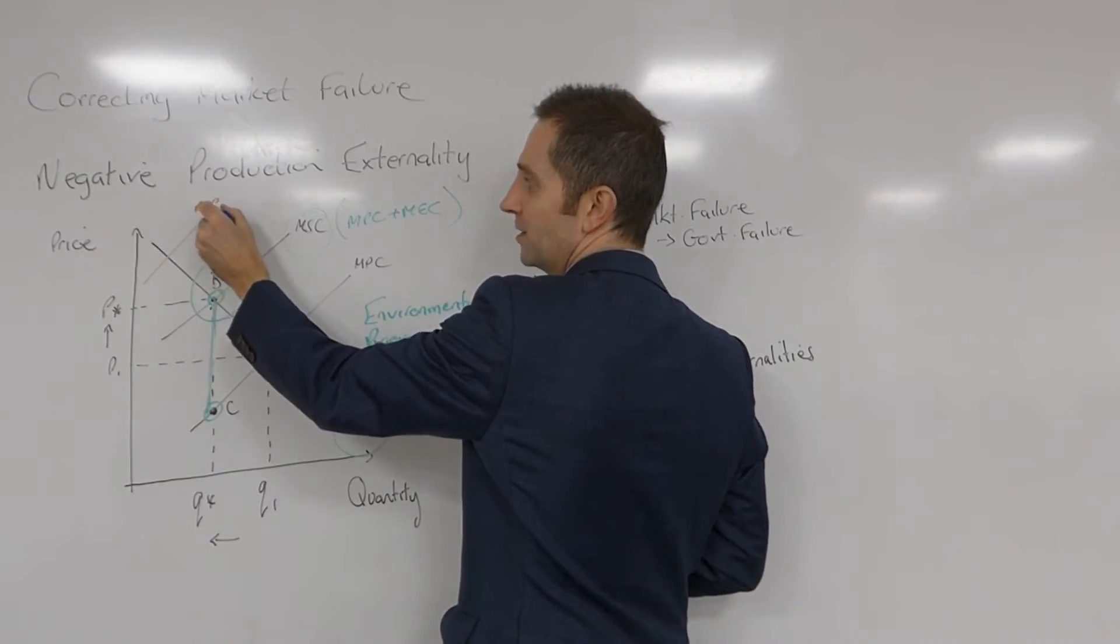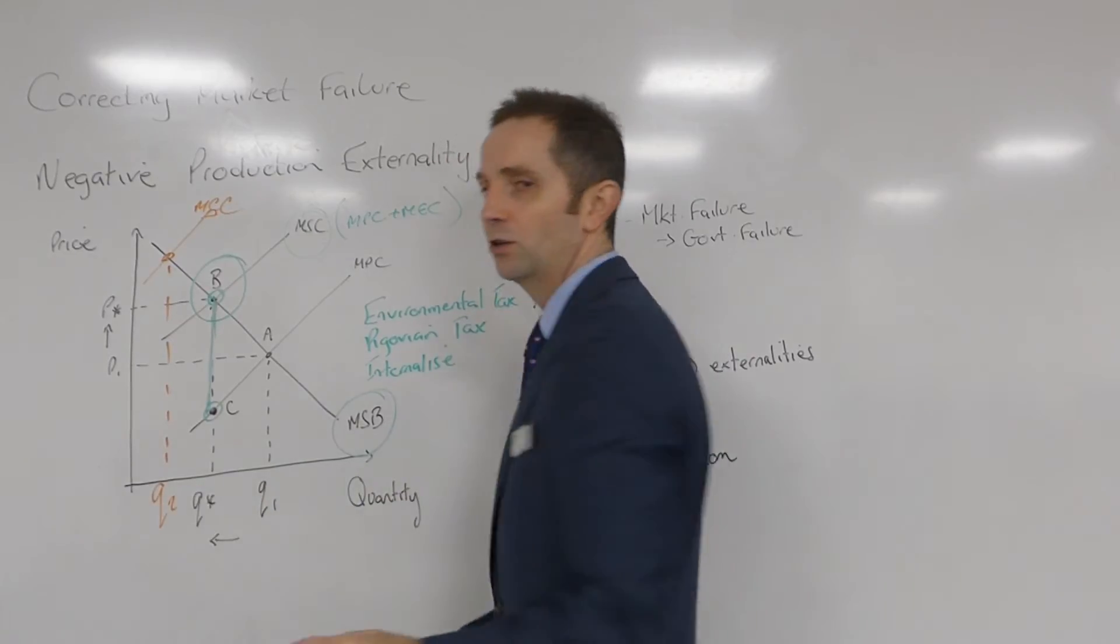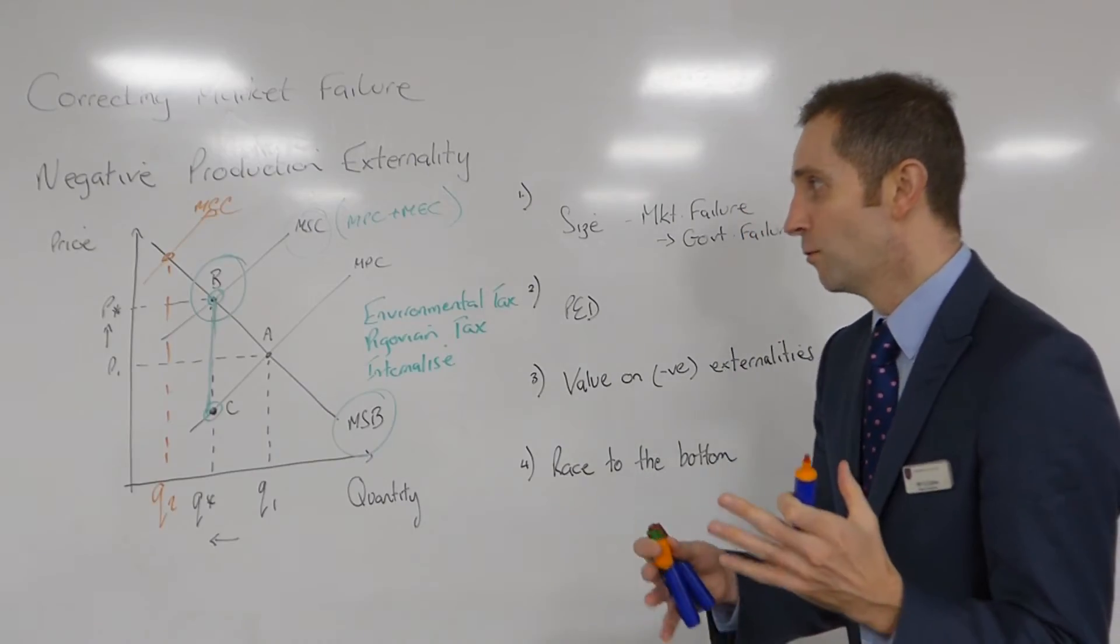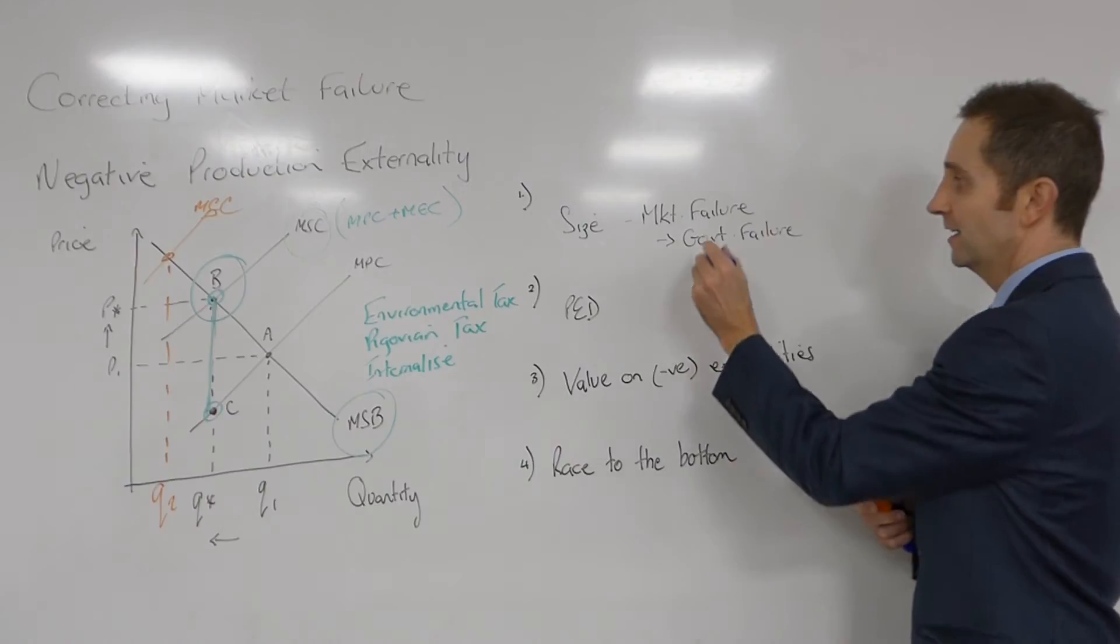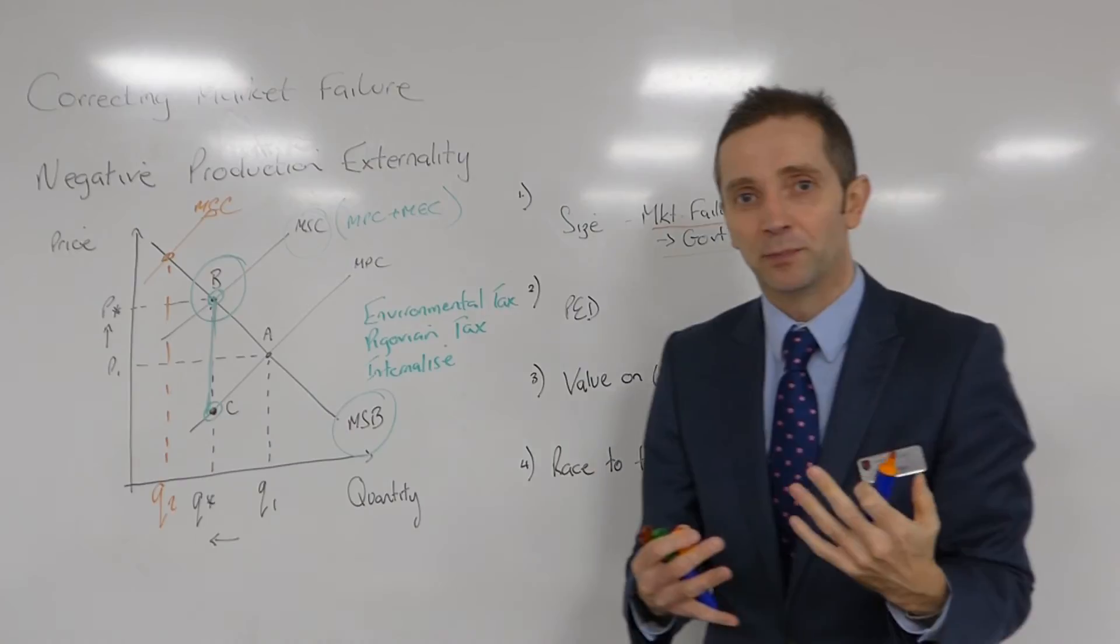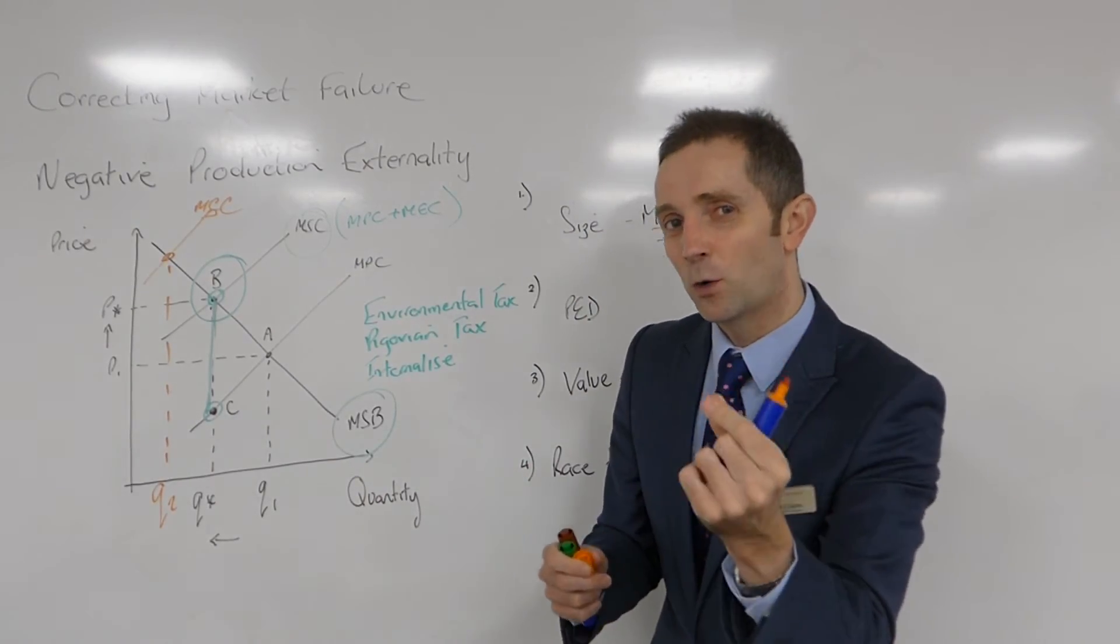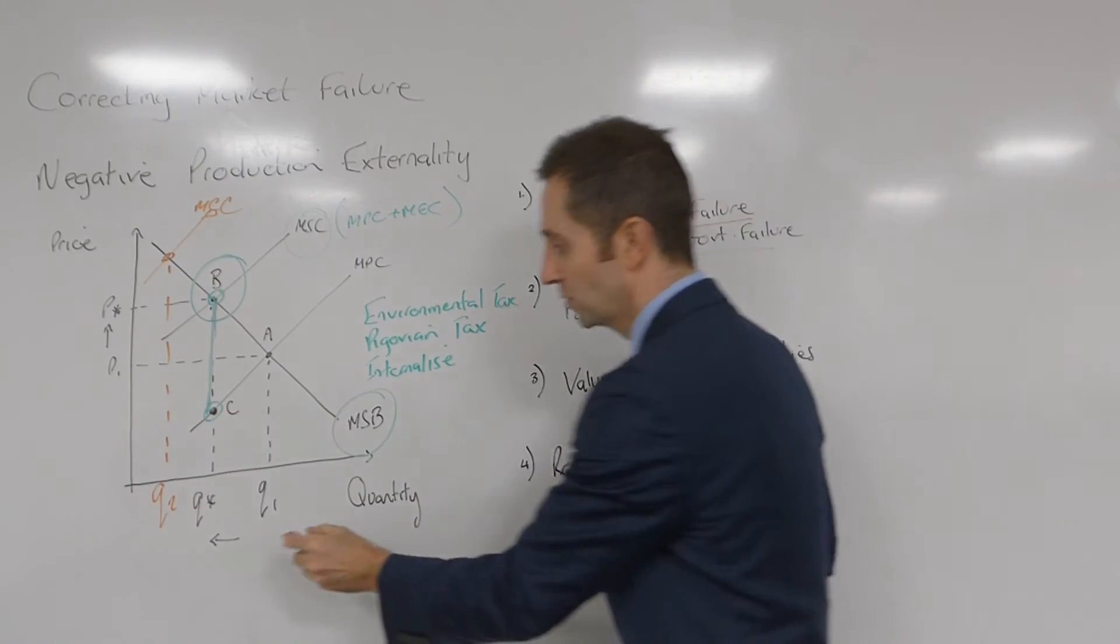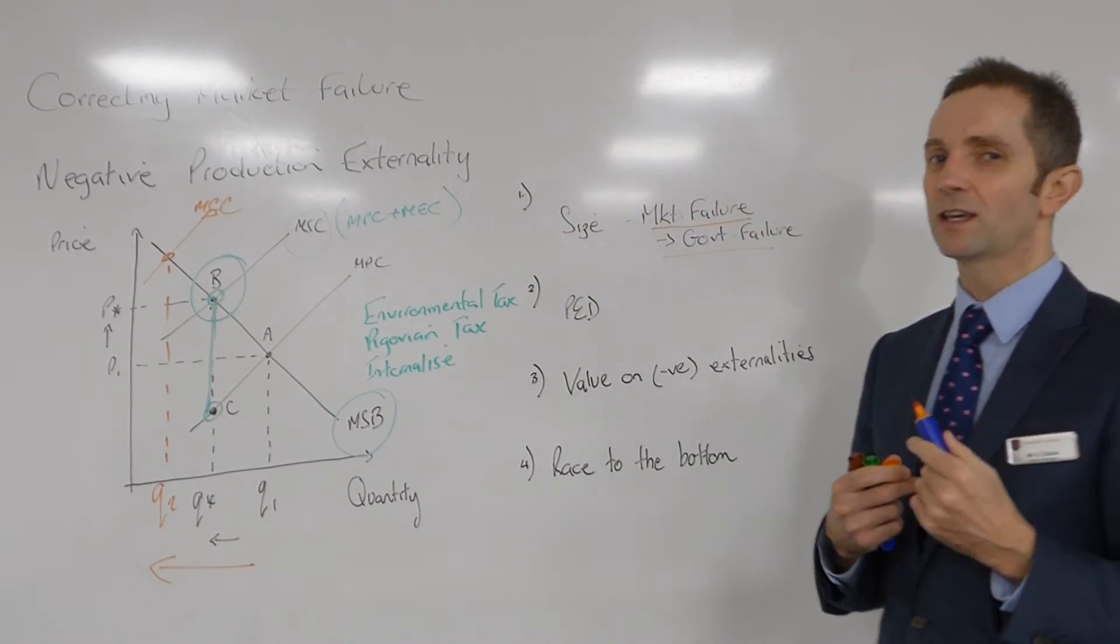Now that would make the situation even worse, because you're not getting enough output being produced, and that would result in market failure becoming government failure, because the government intervenes in the market and actually, because they don't get it quite right, they make the situation worse, because we're moving from Q1 way beyond Q star to Q2.